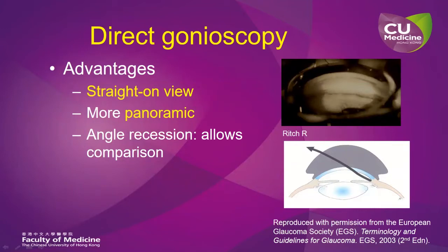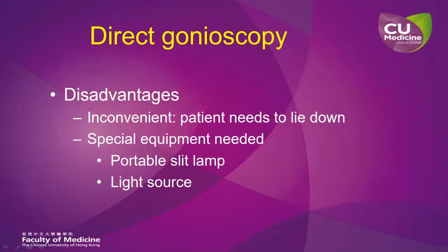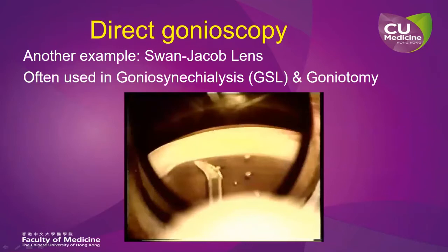One of the advantages of direct gonioscopy is that it provides a straight-on view and also a very wide panoramic view. In situations such as angle recession, it allows a very good comparison of different segments of the angle. The disadvantage is that it is relatively less convenient, with the patient needing to lie down, and we also need special equipment such as a portable slit lamp and a handheld light source. Another example of a direct gonioscope is the Swan-Jacob lens, which can often be used in various surgical procedures requiring direct visualization of the drainage angle.